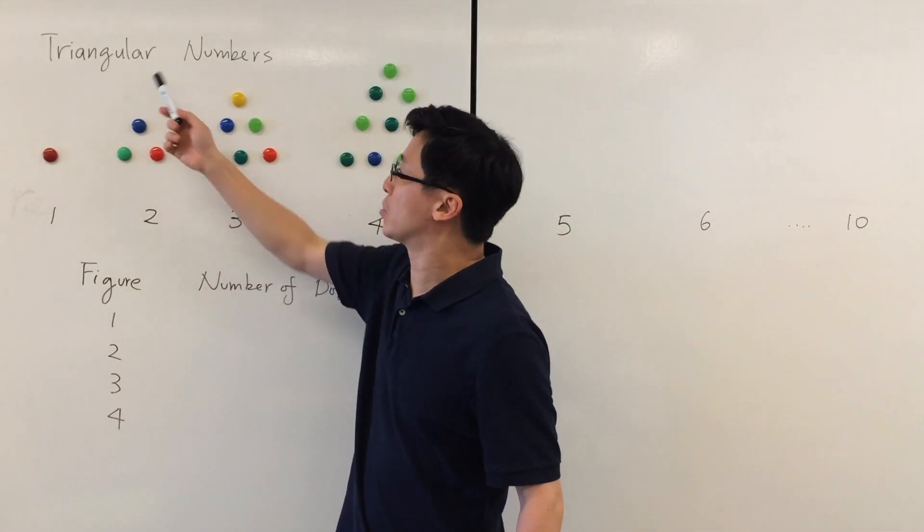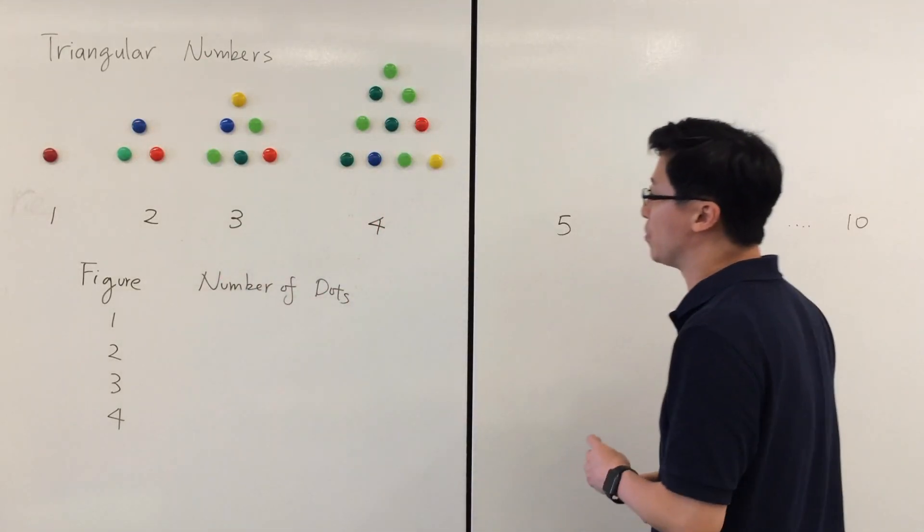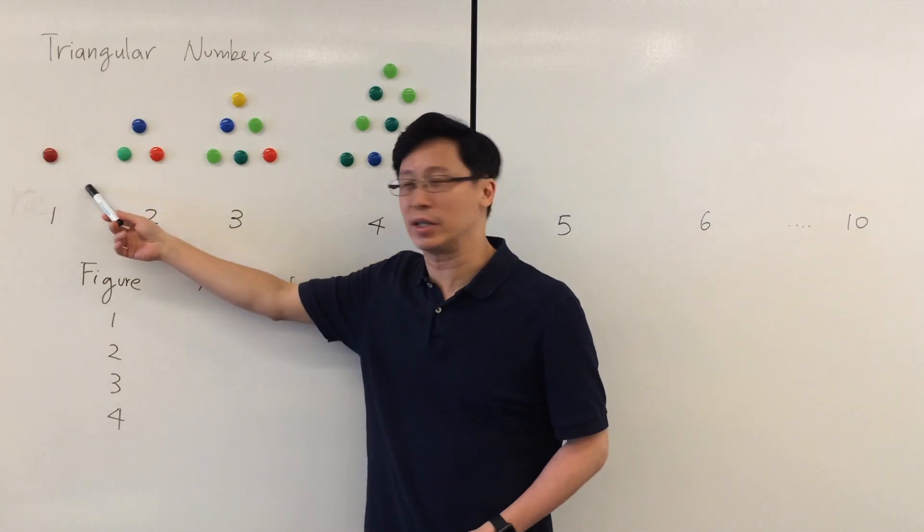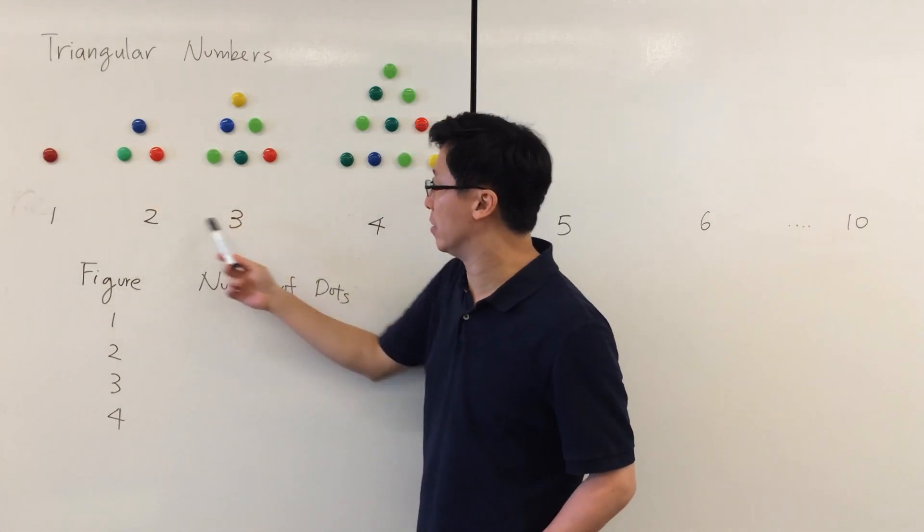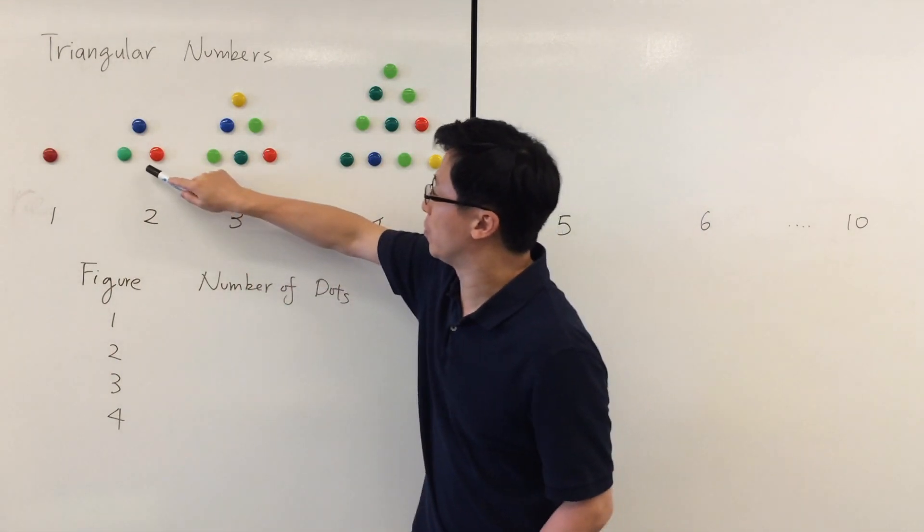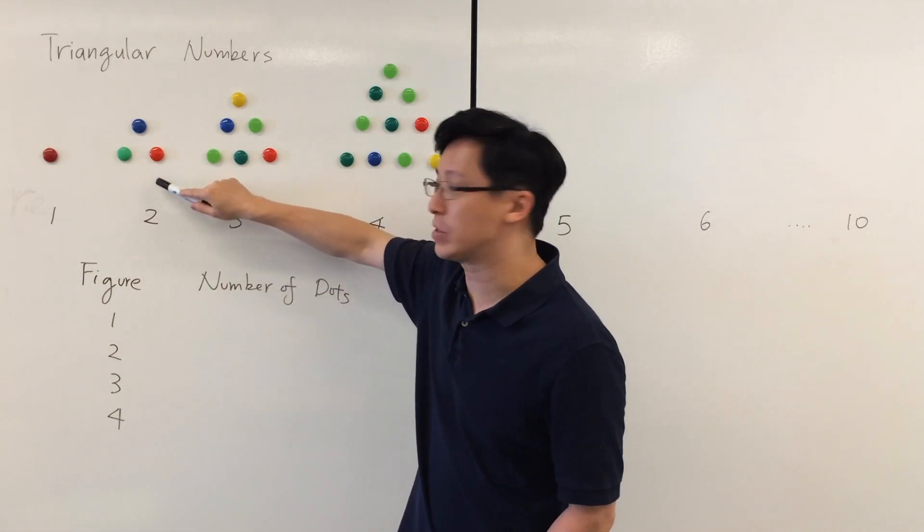Next we can talk about triangular numbers. That means we can arrange the dots in a triangle. This is the first figure, second, third, fourth and so on. Can we count the number of dots in each pattern?